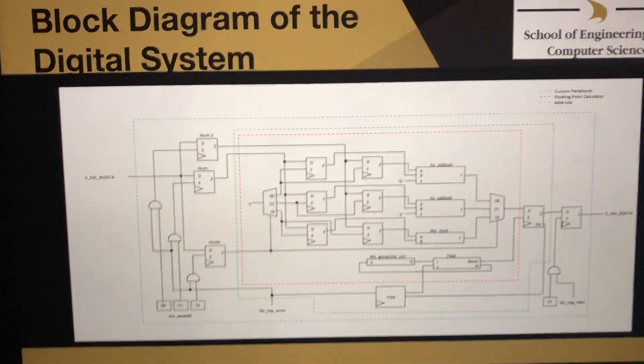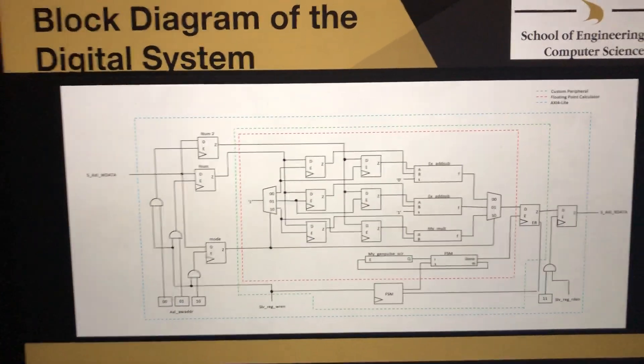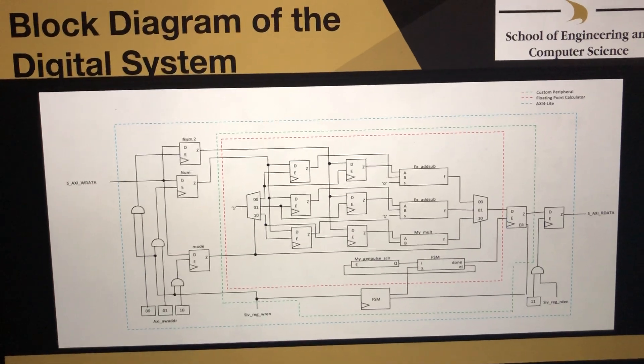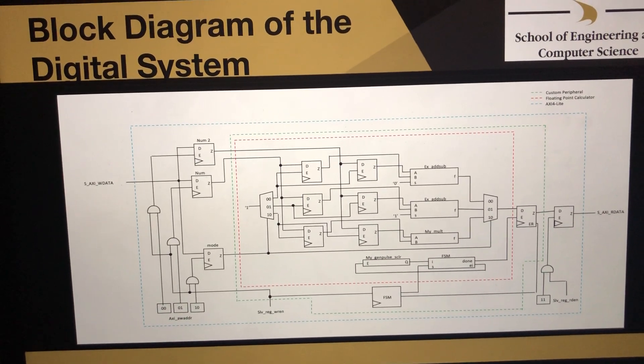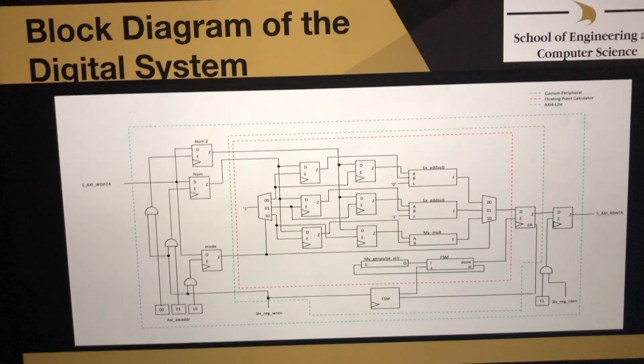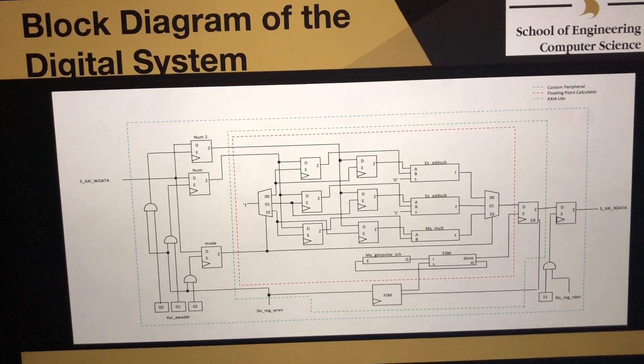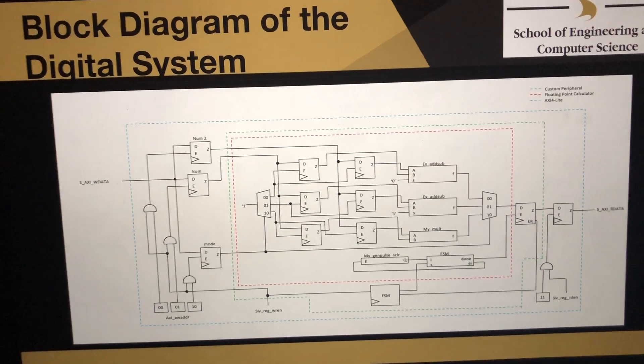This is the block diagram of our system. You can see it's split up into three different sections. The red is the floating point calculator block, the green is the custom peripheral block, and the blue is the AXI4-Lite block.